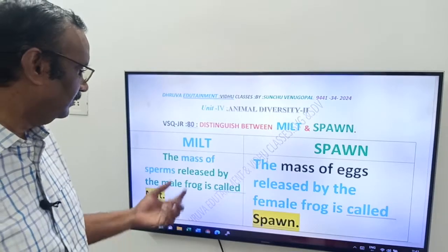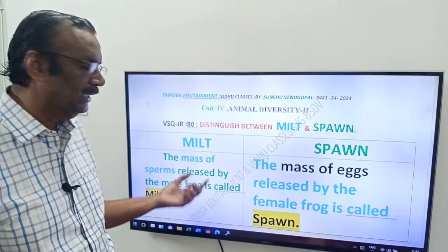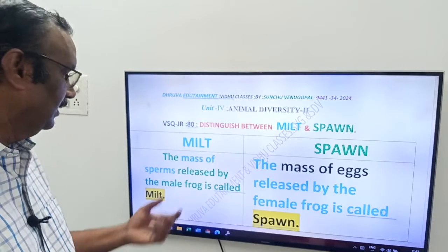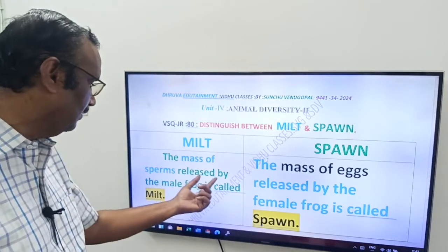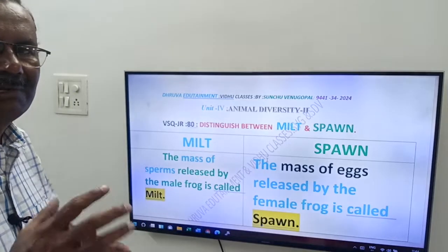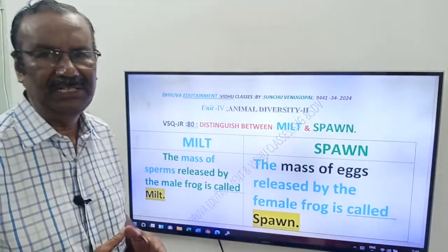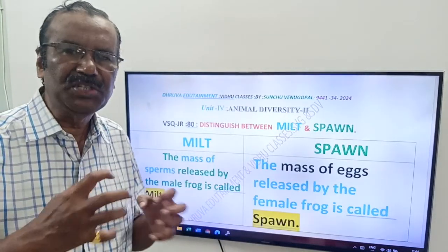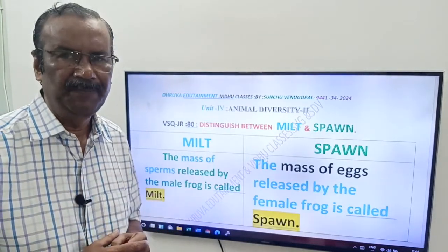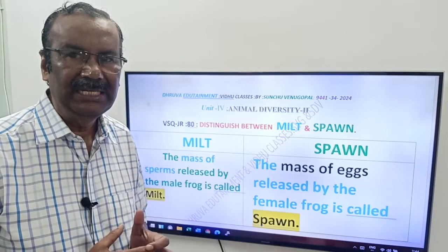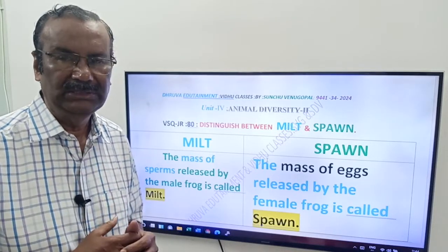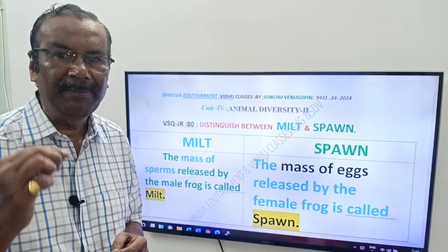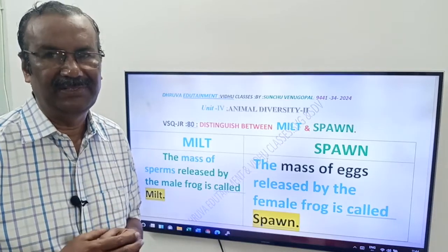What is Milt? The mass of sperms released by the male frog is called Milt — M-I-L-T.